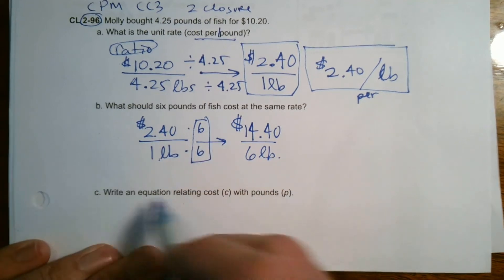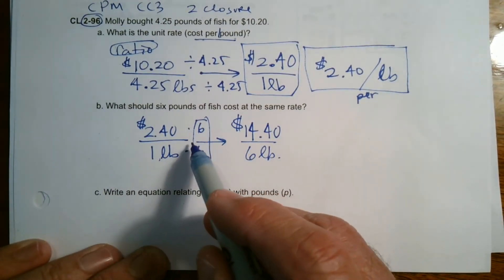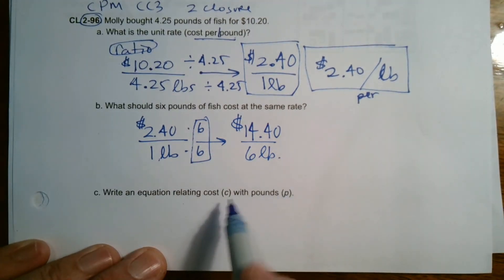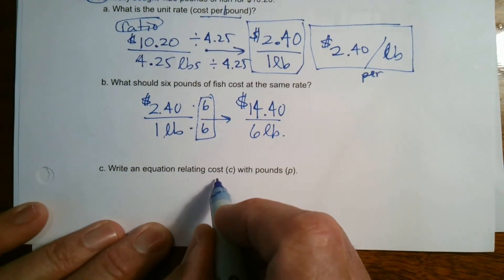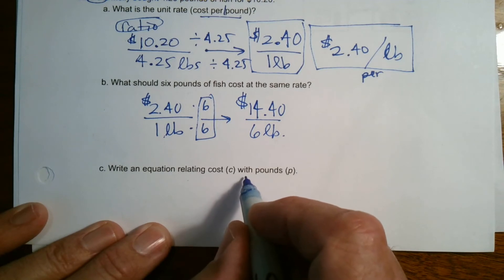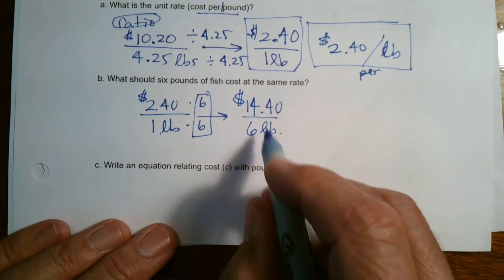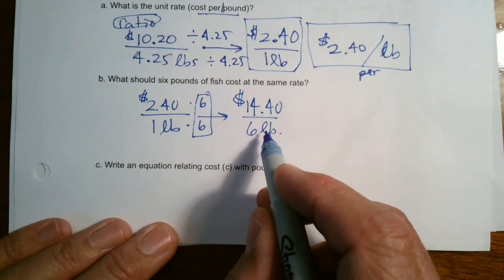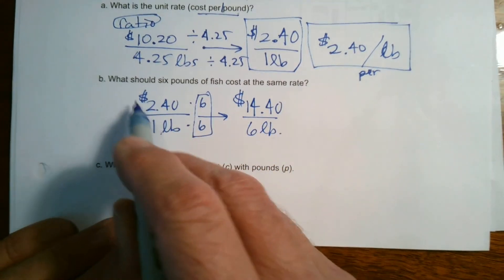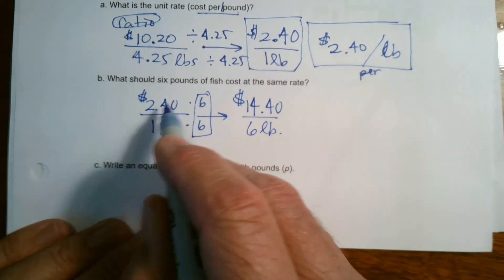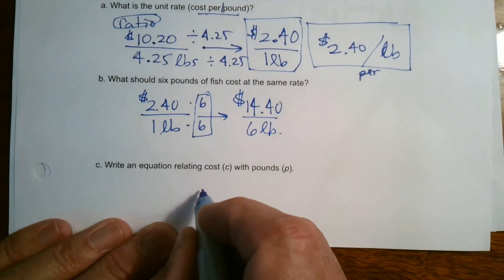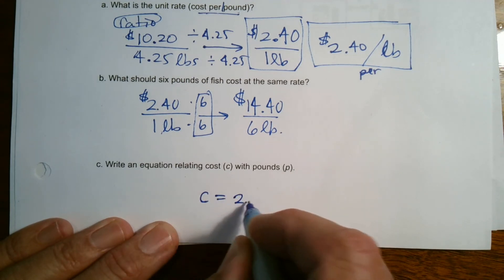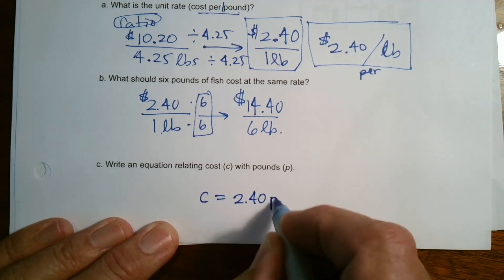So we can then take this idea of what we did here with the unit rate and create an equation relating them, right? So how do I find out cost in terms of pounds? So if I think about it, what did I do to find my cost? I multiplied the six times the unit rate, six times the unit rate is the total cost. That's my pounds.